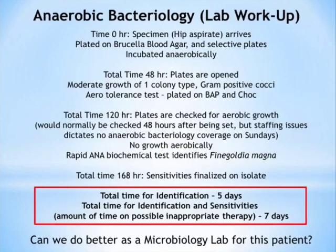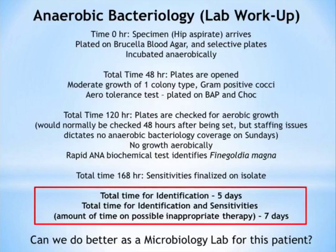Let's examine why it took the microbiology lab five days to identify Finegoldia magna. At time zero, the hip aspirate arrived and was plated on anaerobic-specific plates — brucella blood agar and selective plates — and incubated anaerobically. Anaerobes grow much slower, so after plating, plates are left for 48 hours without opening. After 48 hours, moderate growth of a single colony type was seen — a gram-positive cocci. At this point it's unknown whether the organism is an aerobe or anaerobe, since facultative anaerobes like coagulase-negative staph or Staph aureus can also grow anaerobically.